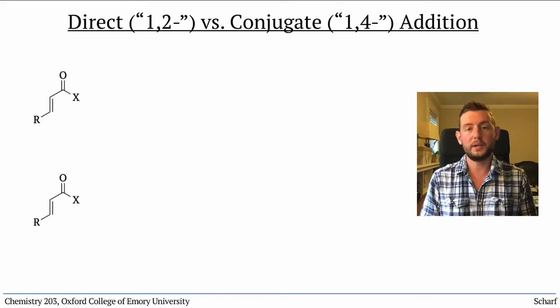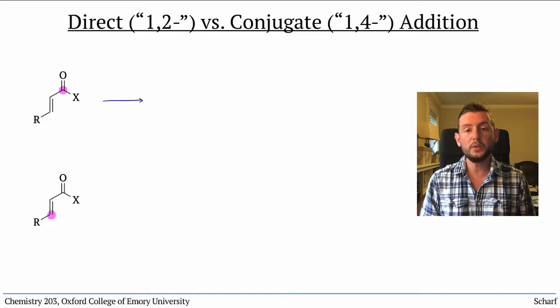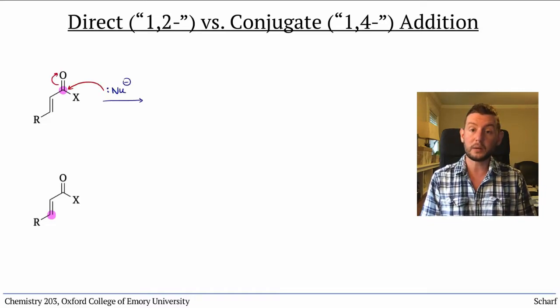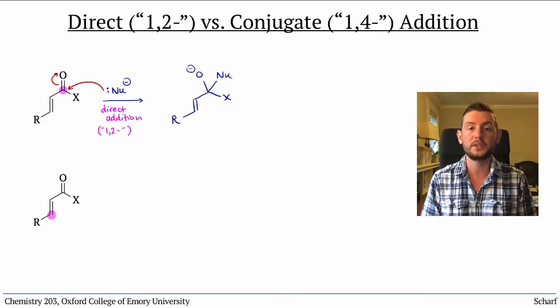Alpha-beta unsaturated carbonyl compounds are electrophilic at both the carbonyl carbon and the beta carbon. When a nucleophile reacts at the carbonyl carbon, it's called direct addition or sometimes 1,2-addition because it just involves the first two atoms of the conjugated system.